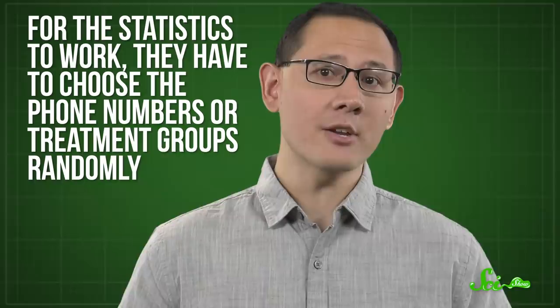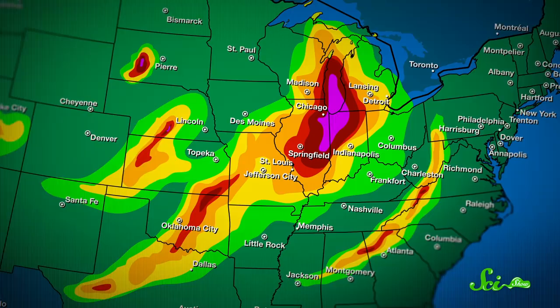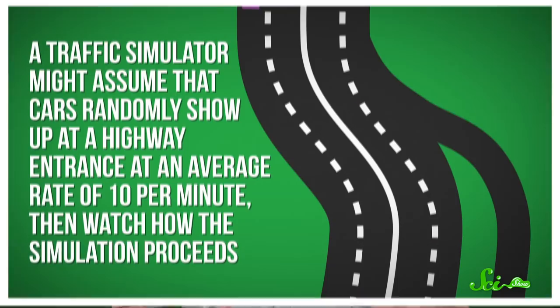Another example is predicting the behavior of very complex systems, like weather forecasts or traffic patterns. These systems may not have simple, neat equations that tell you how they'll develop. Instead, simulations often model the world as a collection of small, randomized components. So a traffic simulator might assume that cars randomly show up at a highway entrance at an average rate of 10 per minute, and then watch how the simulation proceeds.